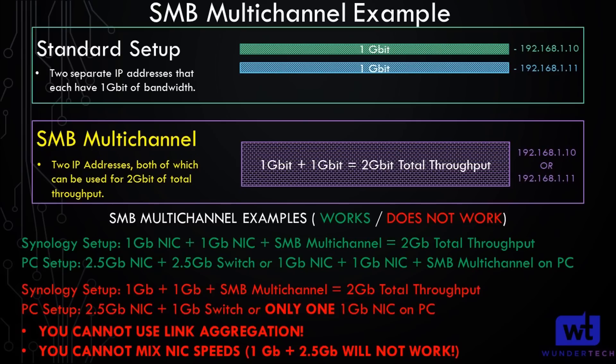So what that means is if you have two gigabit NICs on your Synology NAS, you will be able to use both of them for SMB transfers. Rather than maxing out at one gigabit network speeds, you will max out at two gigabit network speeds.